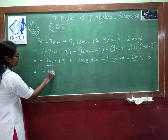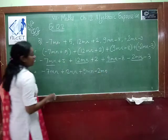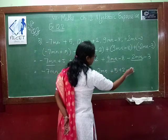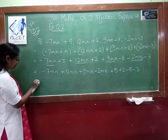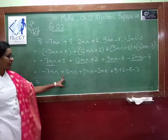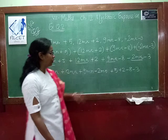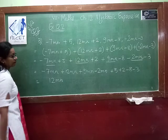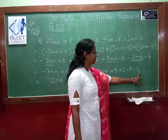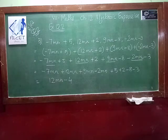We write the like mn terms together: minus 7mn plus 12mn plus 9mn minus 2mn. We also have constant terms: plus 5 plus 2 minus 8 minus 3. For the mn terms: minus 7 plus 12 is 5, plus 9 is 14, minus 2 is 12mn. For the constants: plus 5 plus 2 is 7, minus 8 minus 3 is minus 11, so 7 minus 11 is minus 4. This way we can solve question number 3.